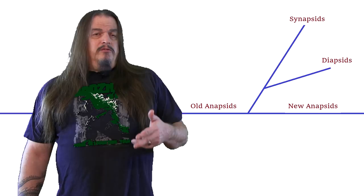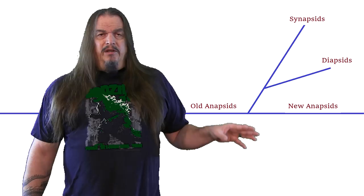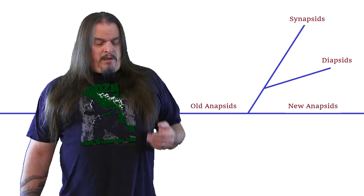So our ancestors were once amphibious, but not actually amphibians, and we were once seemingly reptilian, but we were never actually reptiles because we branched off before the emergence of actual reptiles.